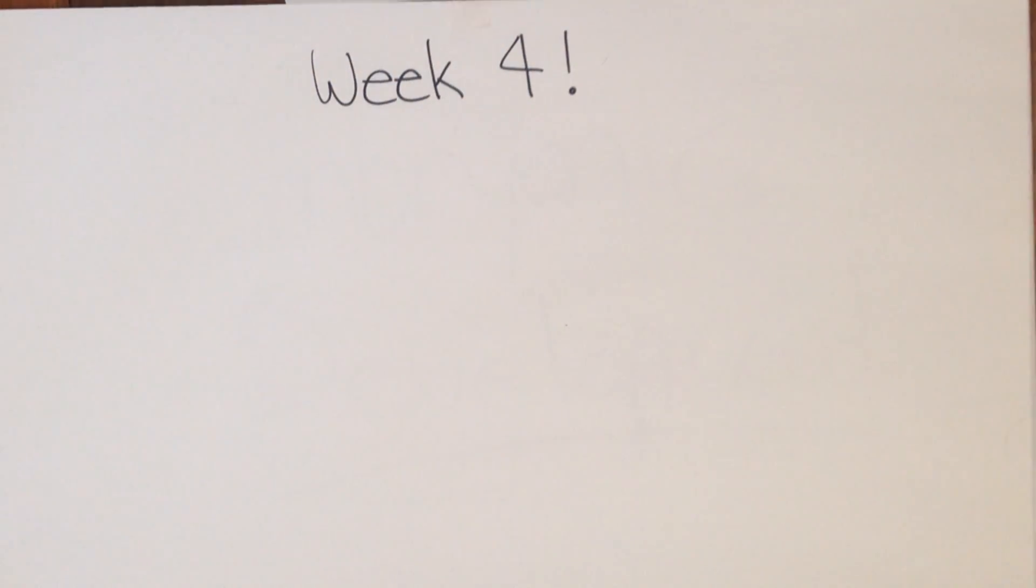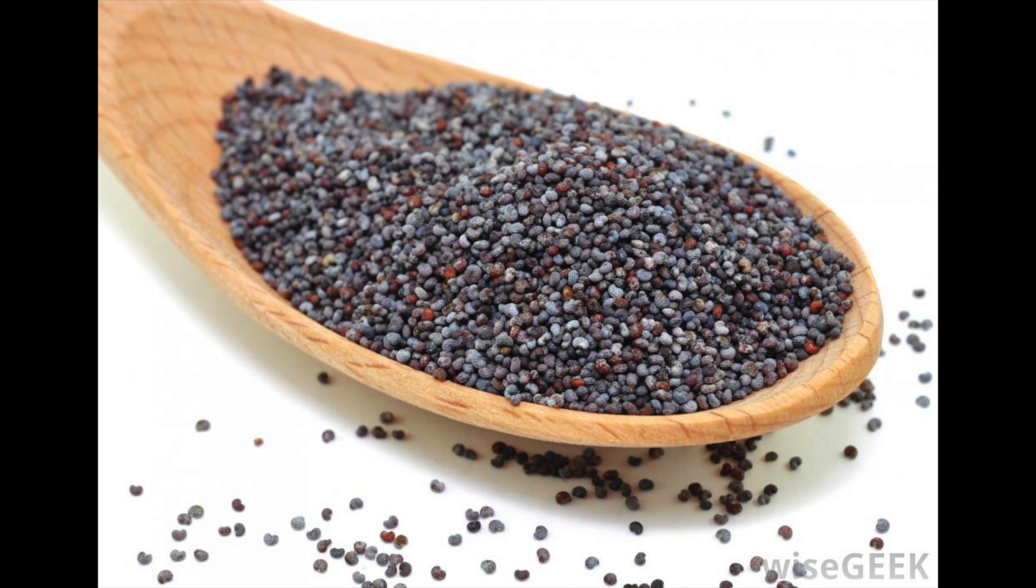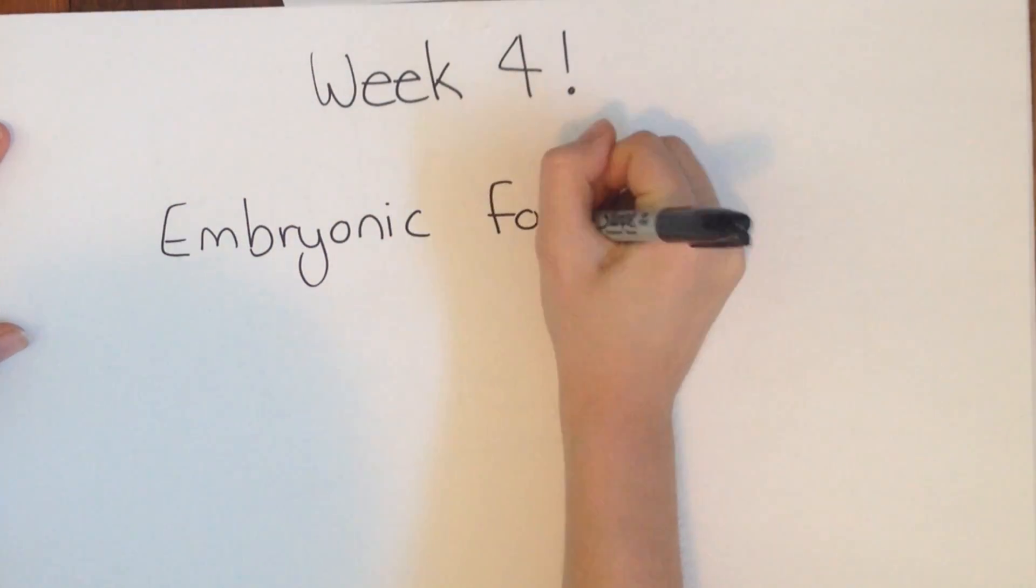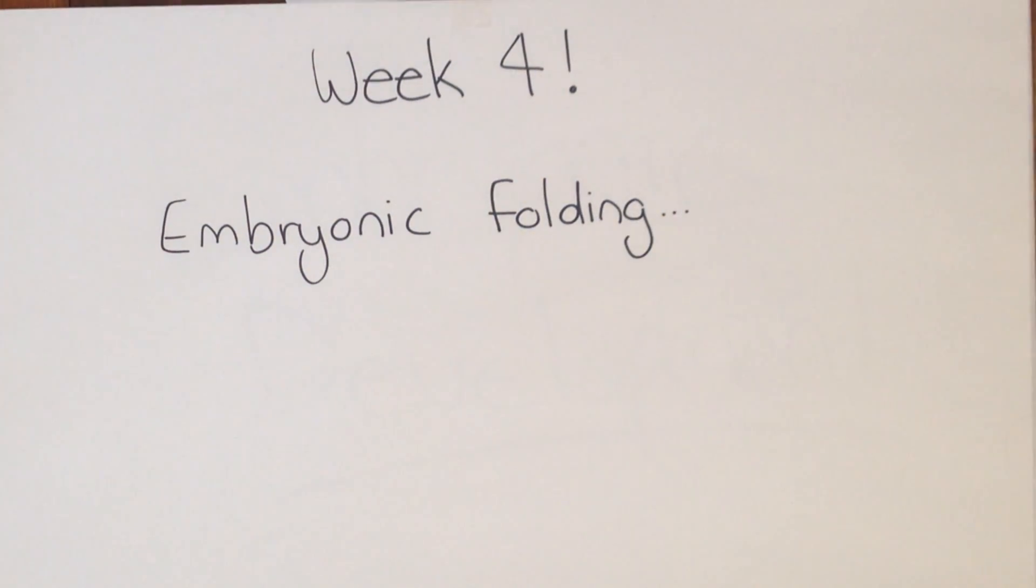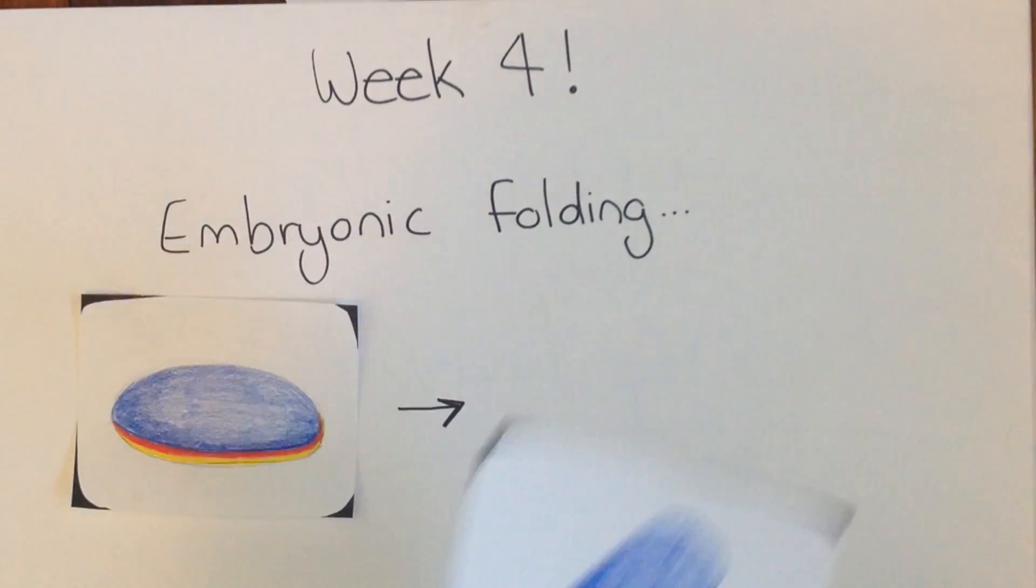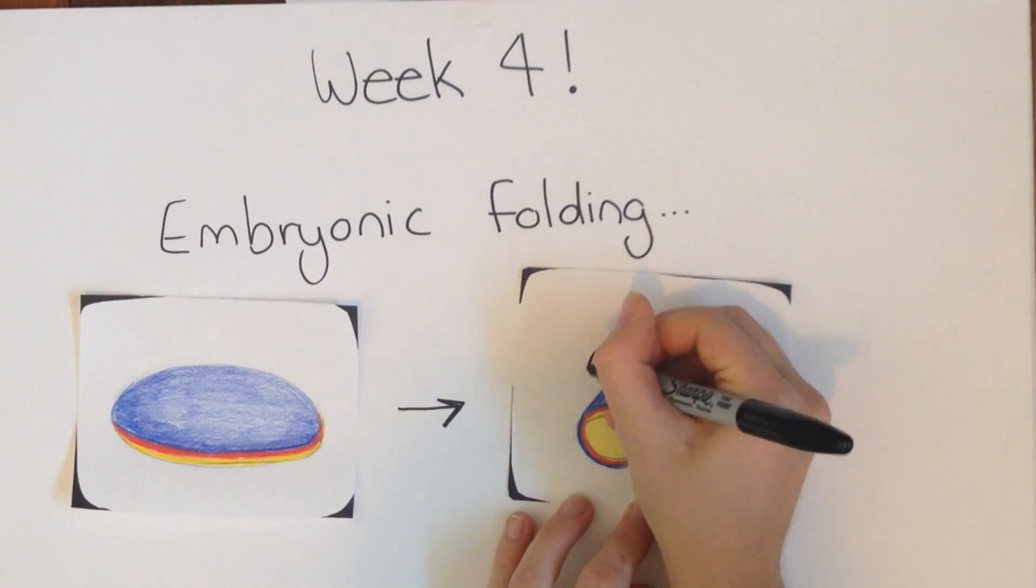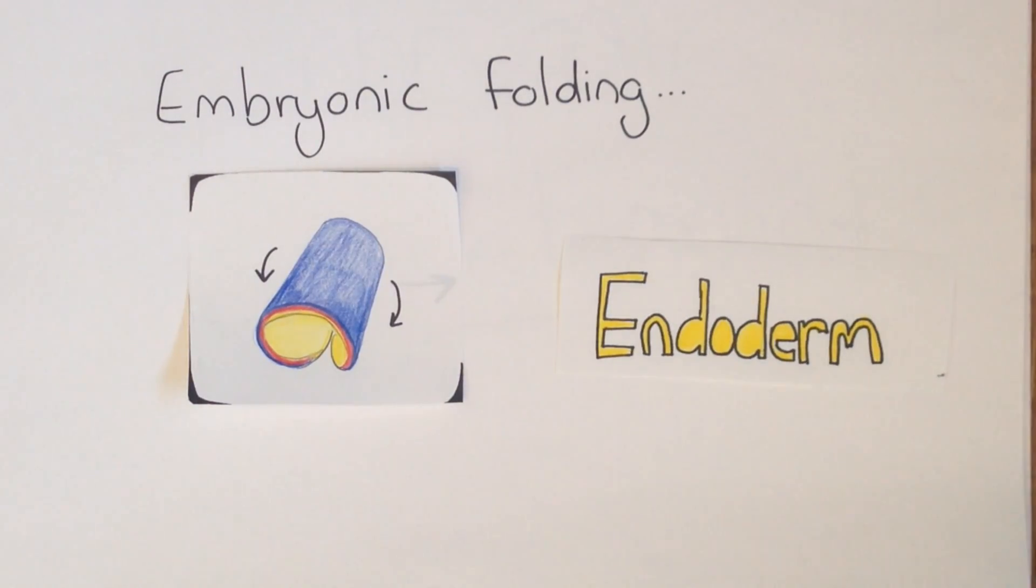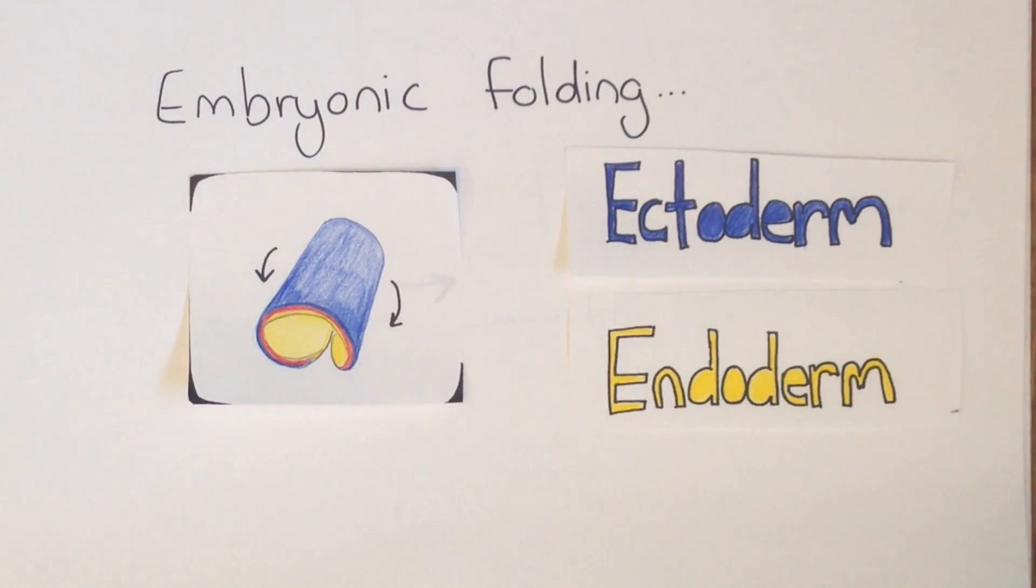In the fourth week after fertilization, the embryo is about the size of a poppy seed. It undergoes a process called embryonic folding due to the rapid longitudinal growth of the neural tube. In embryonic folding, the embryo is essentially converted from a flat two-dimensional trilaminar embryonic disc to a three-dimensional cylinder. The cylinder consists of the endoderm in the center, ectoderm outside and mesoderm in between.